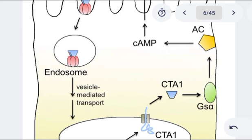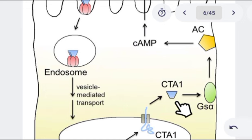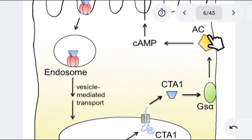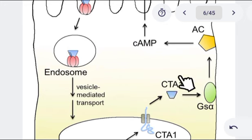But when it comes to the cholera toxin A1 subunit — this is an enzyme — what it does is that it locks the GTP on the alpha subunit of the G protein. It locks GTP such that the GTP cannot leave and cannot be replaced by GDP. So GTP is going to bind permanently on the alpha subunit, and it means that adenylate cyclase enzyme is going to be continuously active. We are going to have elevated levels of cyclic AMP and will continuously activate protein kinase A. In other words, cholera toxin A1 prevents the inhibition of protein kinase A, so protein kinase A is going to be active continuously.